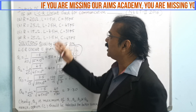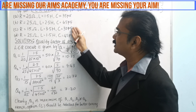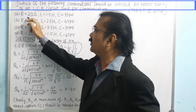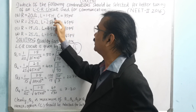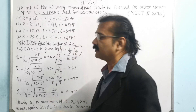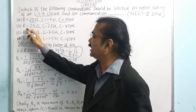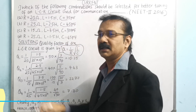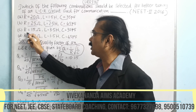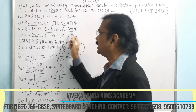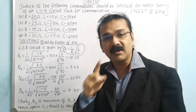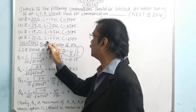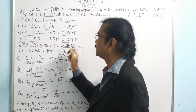Now we have to take four cases. For the first case, R, L, and C are given. For the second case, R, L, and C are given. Third case R, L, and C are given. And finally in the fourth case, R, L, and C are given. We are supposed to substitute into the formula for each case.